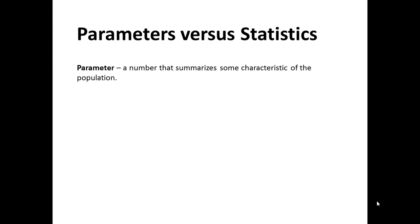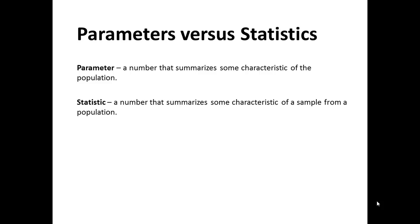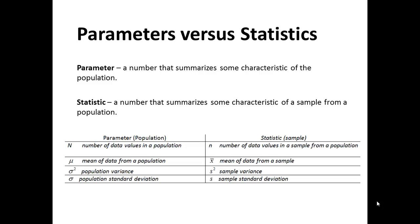A parameter is a single value, a number that summarizes some characteristic of a population, whereas a statistic is a single value that summarizes some characteristic of a sample from a population. Below are some parameters and the corresponding symbols and the statistics.